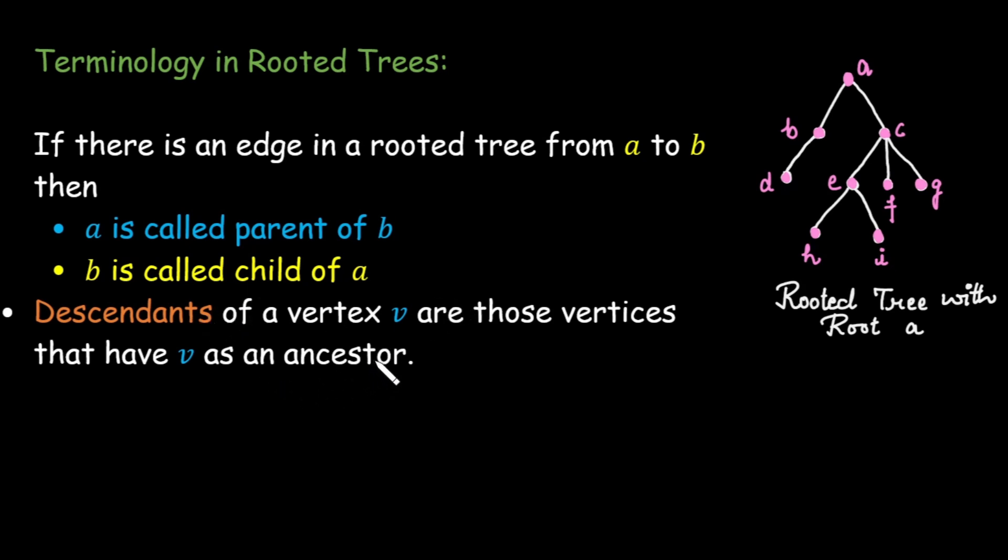For example if we want to find the descendants of vertex c, we include its children that is e, f, g, then the children of those children, that is find the children of vertex e that is h and i. All these vertices taken together form the descendant set of vertex c.